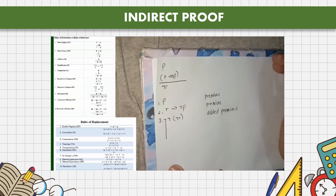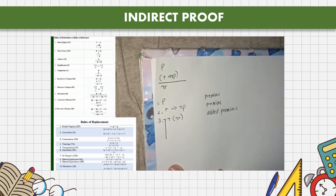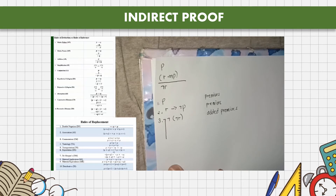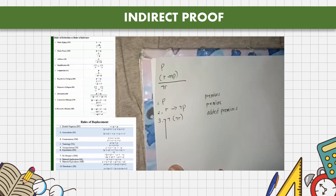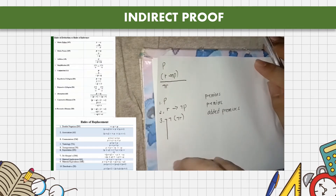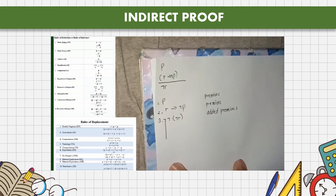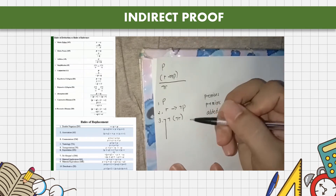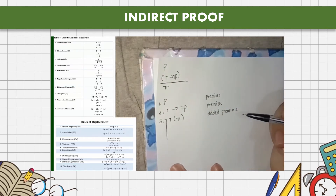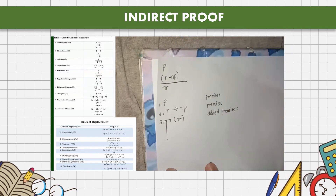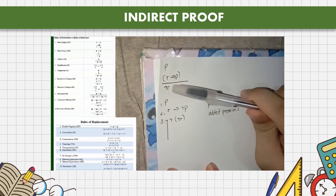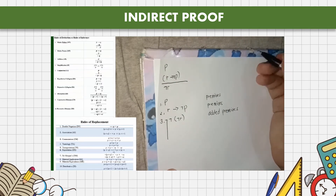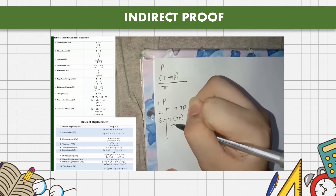We now start proving the contradiction. Looking at our rules of inference and rules of replacement, we see that the added premise not not R can be simplified using double negation (DN), giving us R.